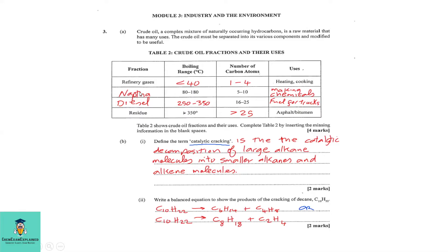For the second part, the boiling range is 80 to 180°C and the number of carbons is 5 to 10. We realize we are in the liquid section, and therefore that would be naphtha, which is used for making chemicals.